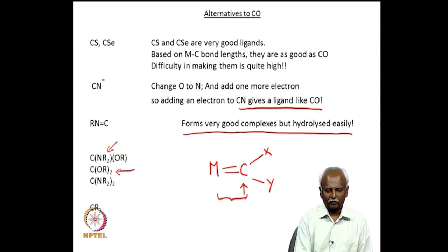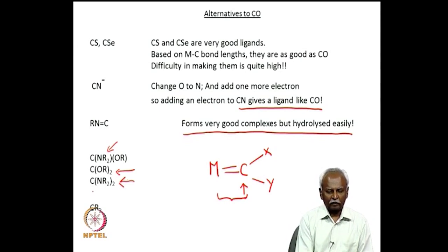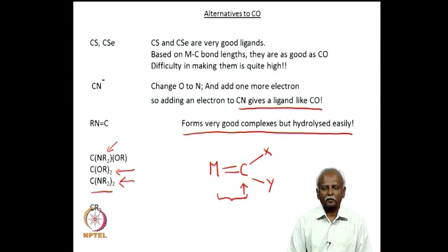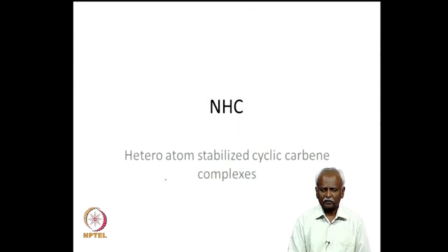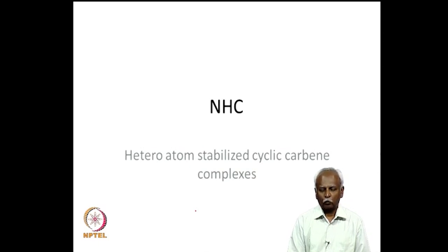These Fischer complexes can have NR₂ and OR groups, two OR groups, or two NR₂ groups on the carbene carbon. This lecture specifically concentrates on the set of ligands where two nitrogens are attached to the central carbon, forming a ring — these are called N-heterocyclic carbene ligands. These heterocyclic carbene complexes are extremely stable when complexed to the metal. They were discovered only in the 1990s and have become very popular since then.